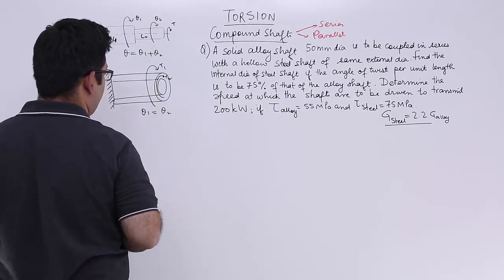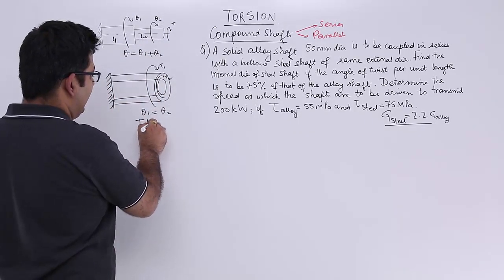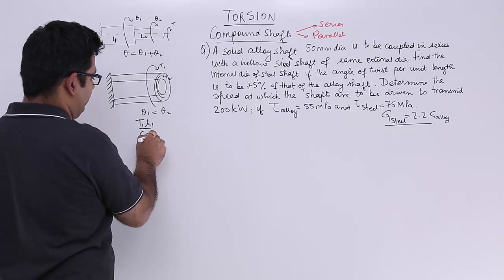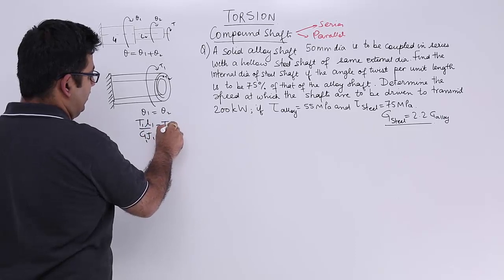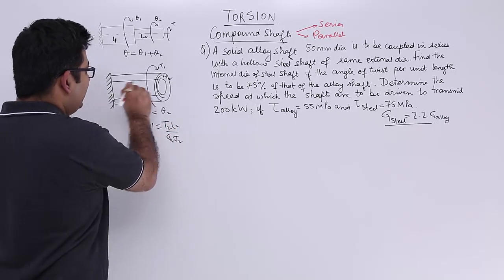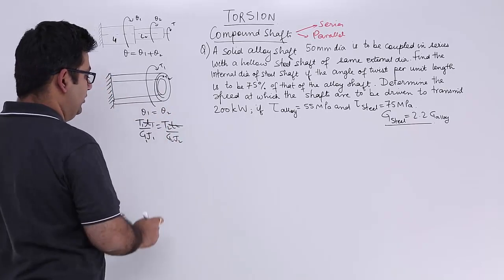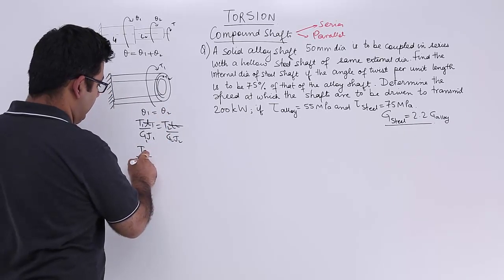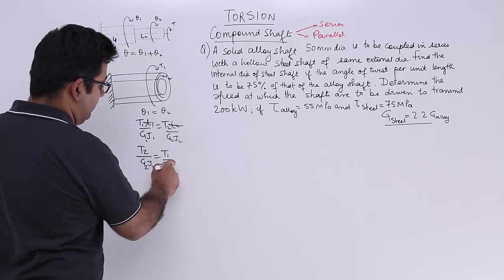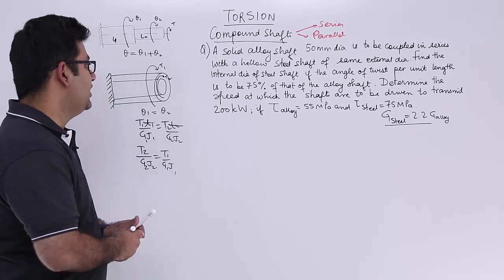From the parallel condition, using the relation theta = TL / (G·J), we get T1·L1 / (G1·J1) = T2·L2 / (G2·J2). Because the length is the same we can cancel L, giving us T2 / (G2·J2) = T1 / (G1·J1).